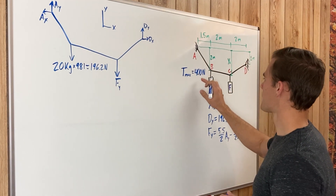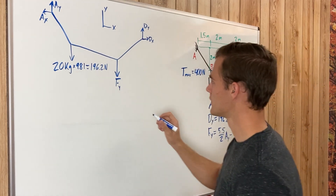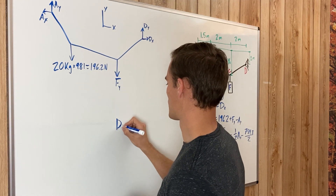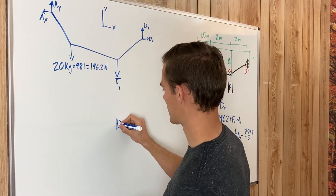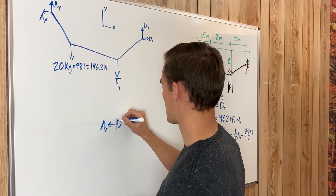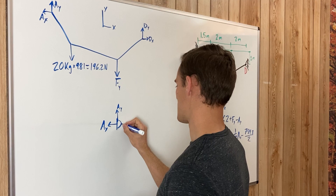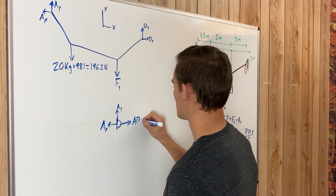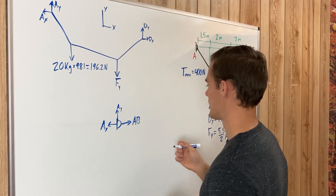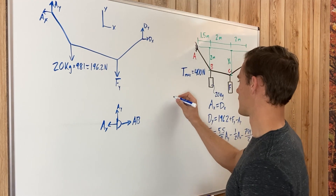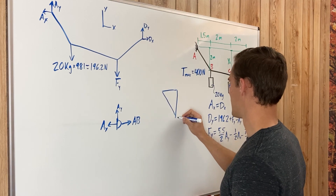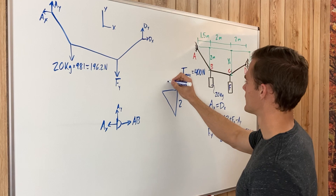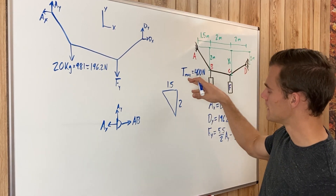Knowing that segment A-B has a tension of 400 newtons, we can solve for A sub x and A sub y using the method of joints. At joint A, we have reaction forces A sub x and A sub y pulling up, and the internal force A-B in the cable. The x and y components of A-B depend on our geometry: we have a right triangle with sides of 1.5 meters and 2 meters.